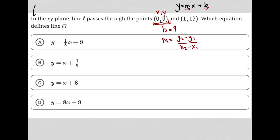So this is my x1 and y1. This is my x2 and y2. So I just have to plug those things in. So I'd have 17 minus 9 over 1 minus 0, which is equal to 8 over 1, which of course is just 8.